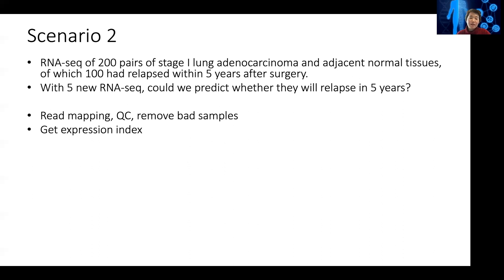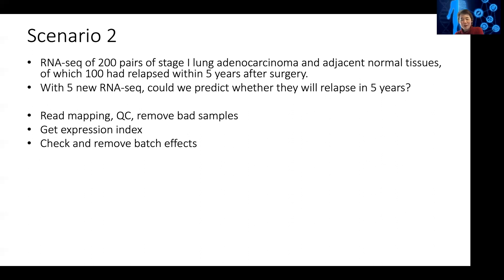With Kallisto or Salmon, you get expression indices. As mentioned, you should check for batch effects, because I have seen data where all samples cluster in two groups. It turned out half of the samples were processed in the summer and the remaining samples in the fall. That's clearly a batch effect, not biological, so you should remove it and make sure the remaining data clusters based on tumor versus normal before trying to detect differences between relapse and non-relapse samples.